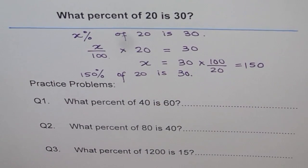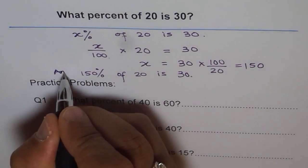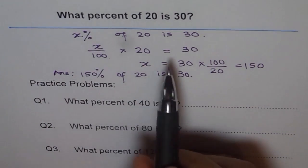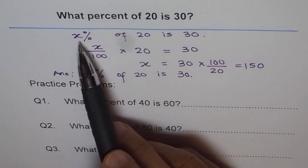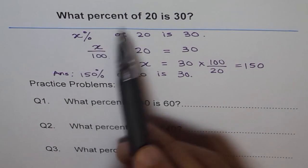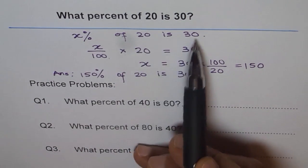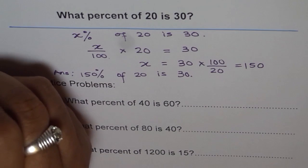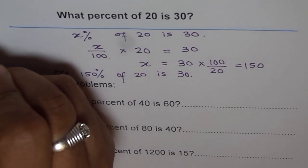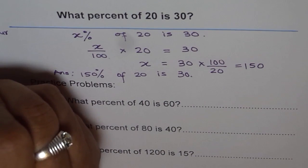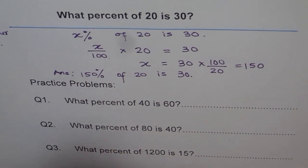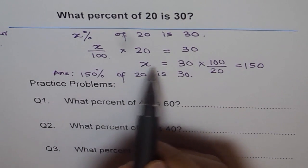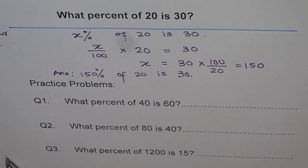That's our answer. First, try to understand how we did it. We don't know what percent, so we say x percent of 20 is 30. The first step is to define your variable. Then we simplify our equation.